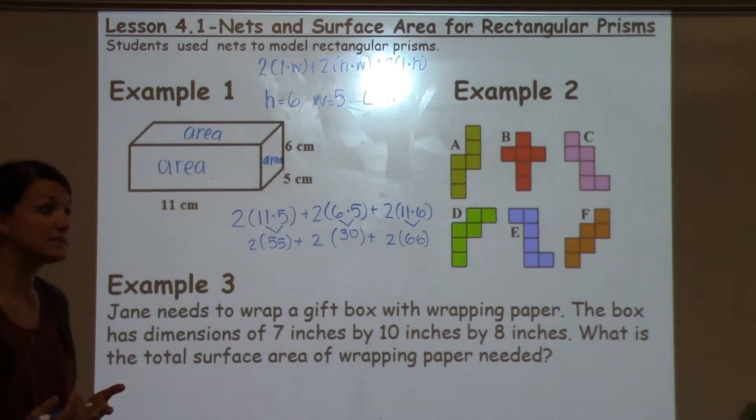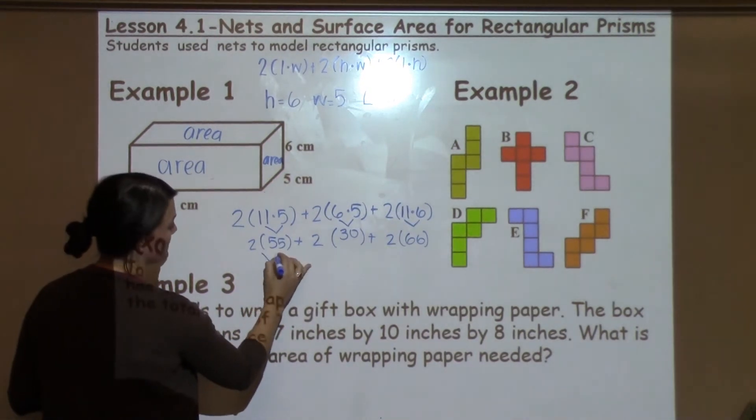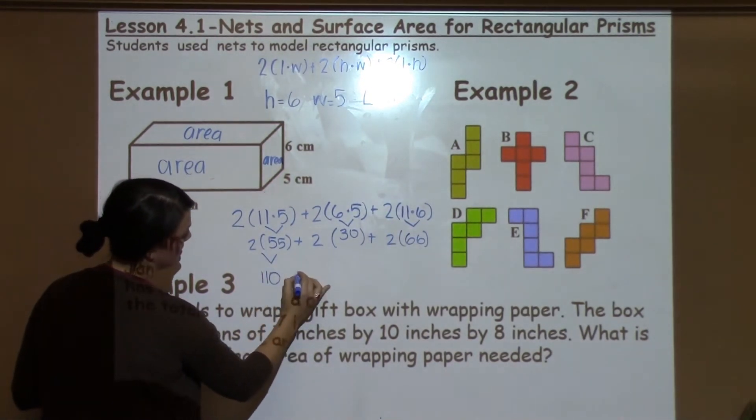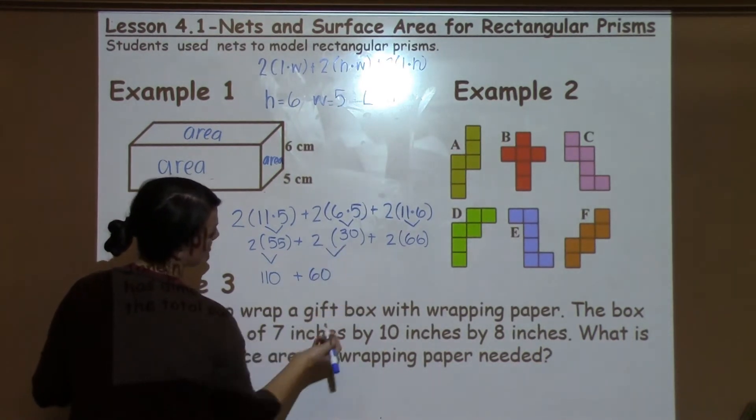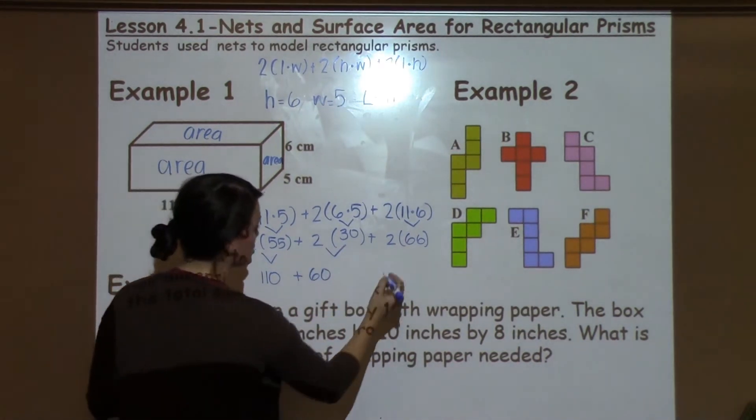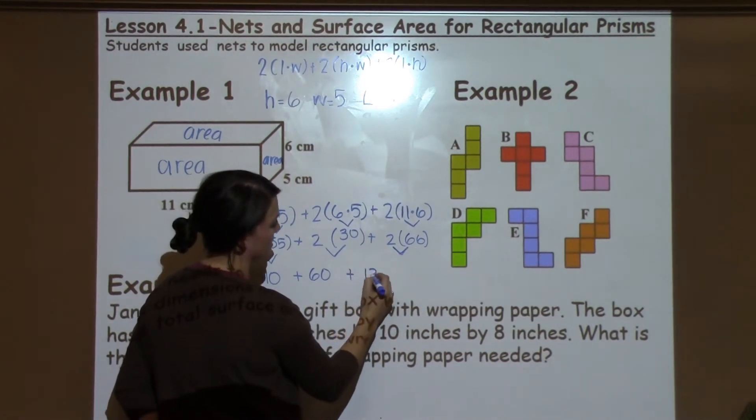Now all I have to do is double each one of those. So 55 would be 110, 2 times 30 is 60, so I'm just doubling those or taking them times 2. 2 times 66 is 132.